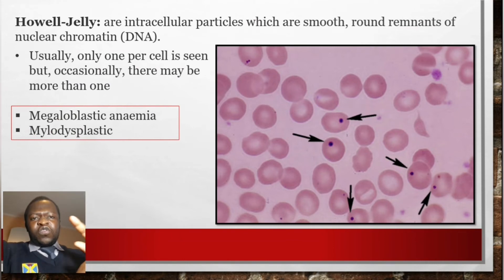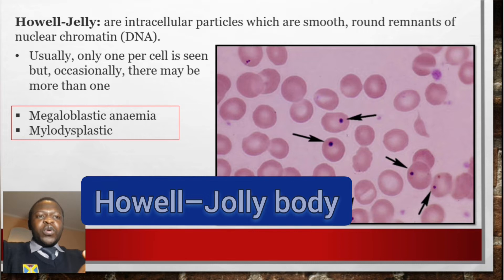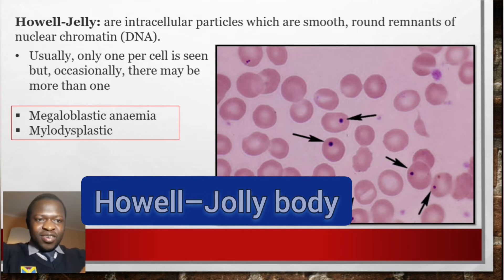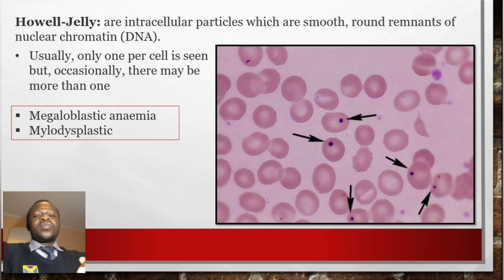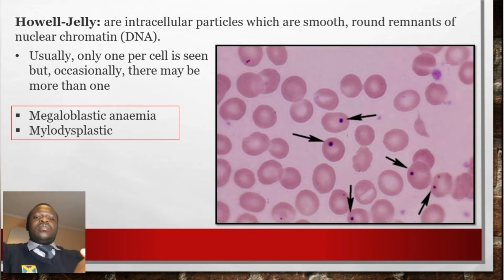Howell-Jolly bodies are intracellular particles which are smooth and round — they are remnants of nuclear chromatin (DNA). Usually only one per cell is seen, but sometimes more can be present. Howell-Jolly bodies are mainly seen in megaloblastic anemia and myelodysplastic anemia.